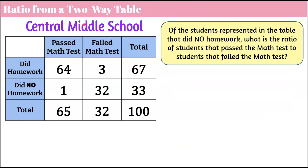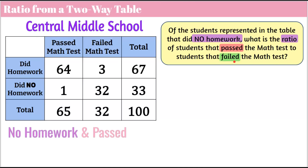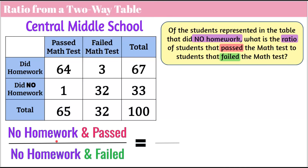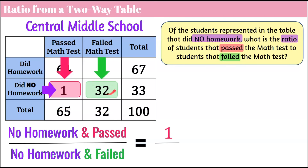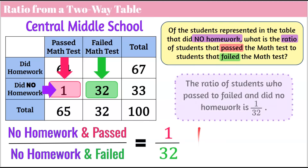Let's get a ratio from a two-way table. Of the students represented in the table that did no homework, what is the ratio of students that passed the math test to students that failed the math test? We're going to write it as passed to failed for the no-homework group. No homework and passed is 1; no homework and failed is 32. So the ratio of passed to failed among students who did no homework is 1 to 32.